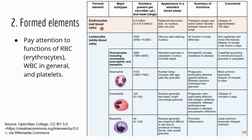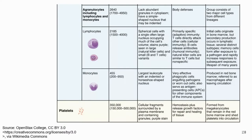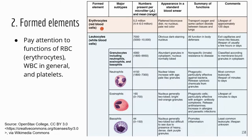Now about the formed elements, I have a large table on two slides, but you do not need to know all this information in the table. I just put it out there as a reference. If you need more details or are interested in a specific type of cell, you can look at this table. But you do not need to memorize all this information — you only need to know the functions for each group: red blood cells, white blood cells, and platelets in general.